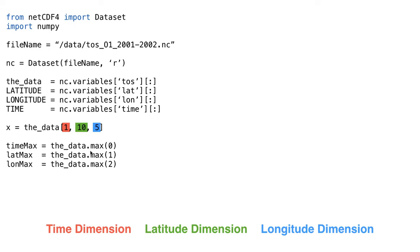So here you have underscore_data.max(0), which means take the max across every single timestamp and find the maximum sea surface temperature values across those times. Take that result — which becomes a two-dimensional array — and put it in the variable time_max. Then underscore_data.max(1) takes the maximum across every single latitude, giving a two-dimensional array stored in the variable lat_max. And data.max(2) takes the maximum across the longitude dimension, giving a two-dimensional array stored in the variable long_max.